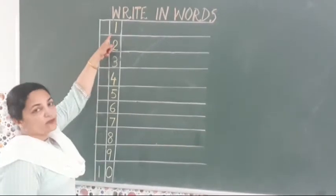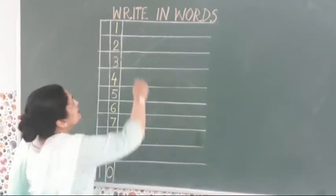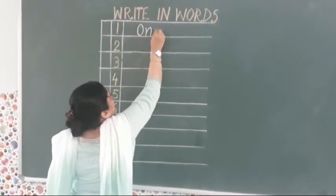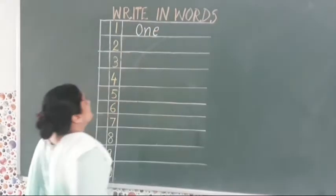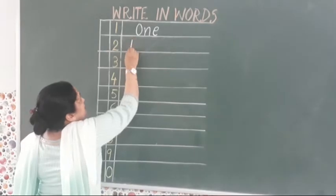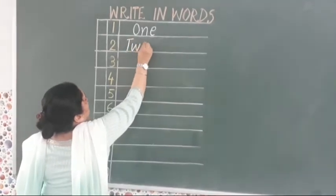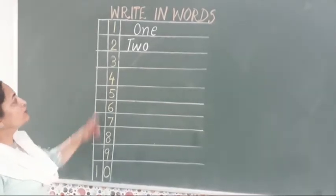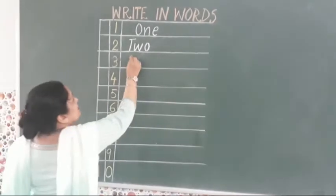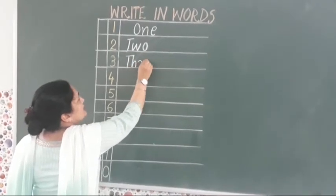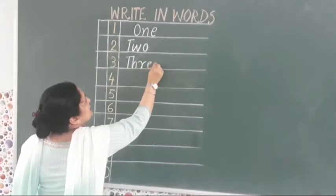Spelling of one is O-N-E, one. T-W-O, two. Spelling of three is T-H-R-E-E, three.